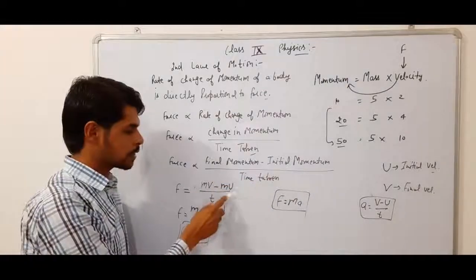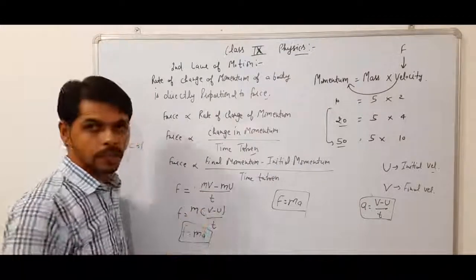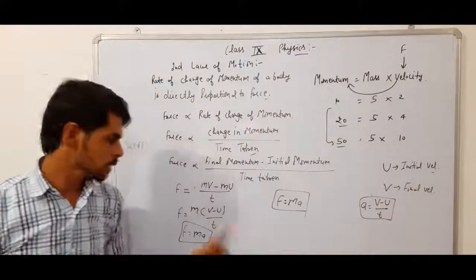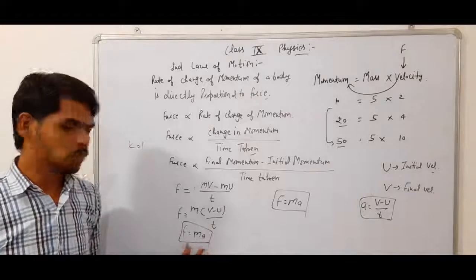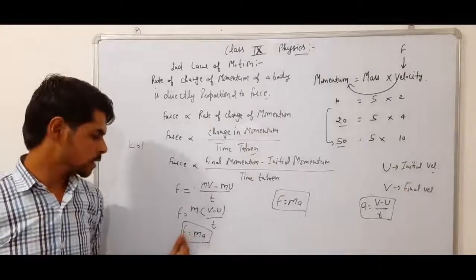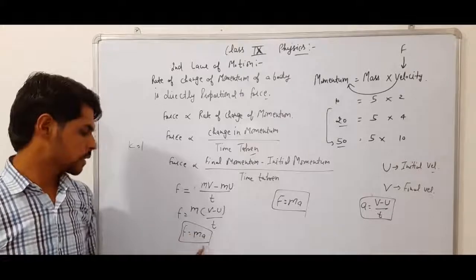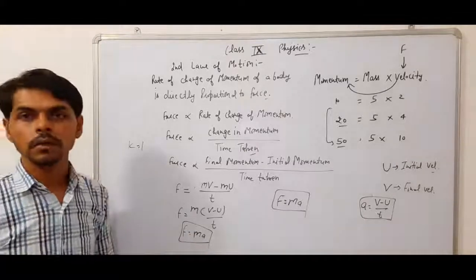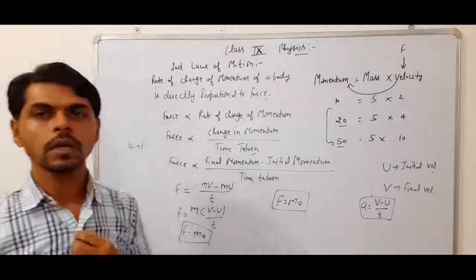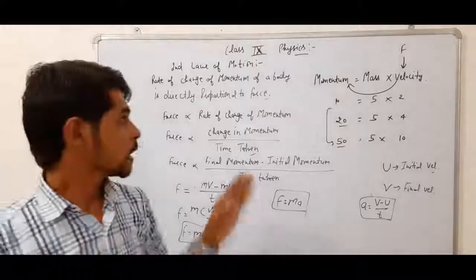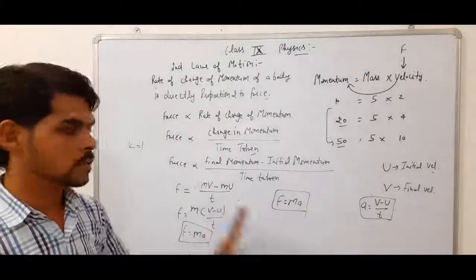Taking mass m common, v minus u by t, and since v minus u by t is acceleration, F is equal to MA — mass into acceleration. That is force. This is the derivation of Newton's second law of motion.